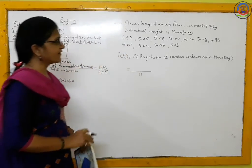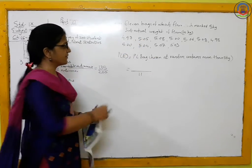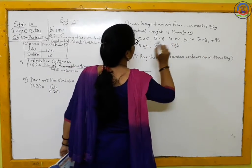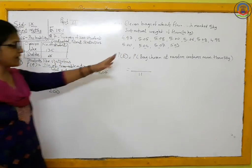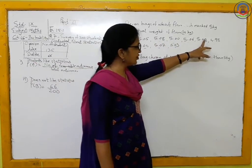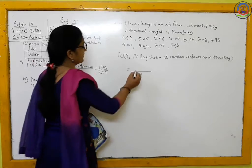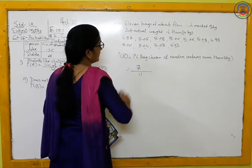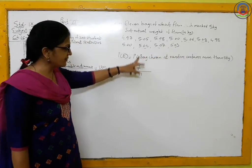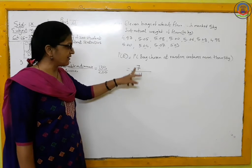We count the number of bags which weigh more than 5 kg. Counting through the data: the bags with weights 5.08, 5.08, 5.08, 5.06, 5.08, 5.04, 5.07, and 5.06 — seven bags in total have weight more than 5 kg. So the probability of the event where the bag chosen at random contains more than 5 kg is 7 divided by 11.